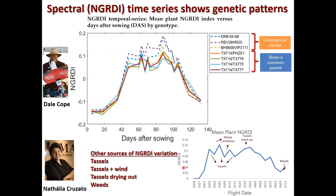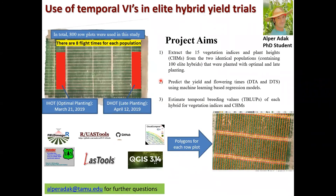Another example from Natalia looks at NGRDI over time on seven specific hybrids — three unrelated commercial checks plus four lines from my breeding program sharing a common parent, TX714. The lines that are half-sibs sharing that common parent have spectral features that are more similar throughout the growing period than the unrelated commercial checks. That tells me that relatedness is probably a larger feature of this prediction than something actually structural.